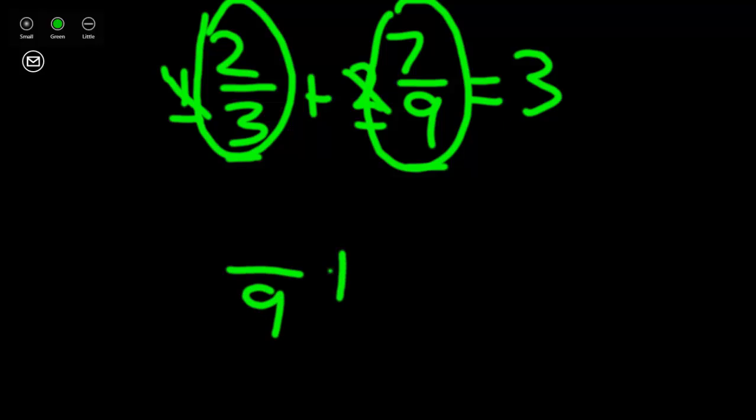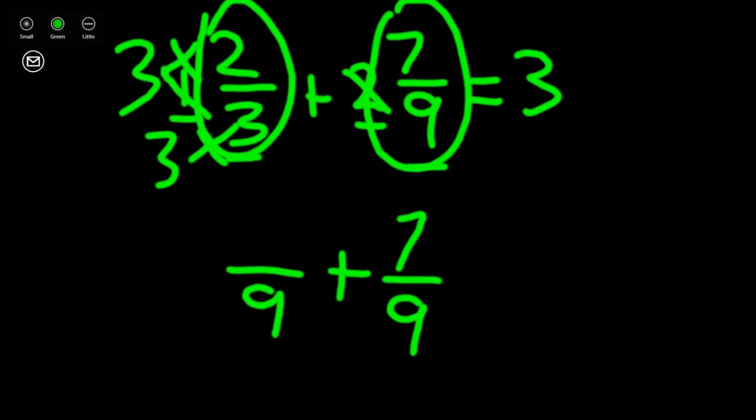I'm going to set up my new problem. We know we're keeping 7 ninths, but we need to have an equivalent fraction for 2 thirds. Now the first question you need to ask yourself is, what did you do to the denominator 3 to get to 9? Well, we multiplied it by 3. So we need to be a copycat, multiply our numerator by 3 and we'll have the equivalent fraction 6 ninths.